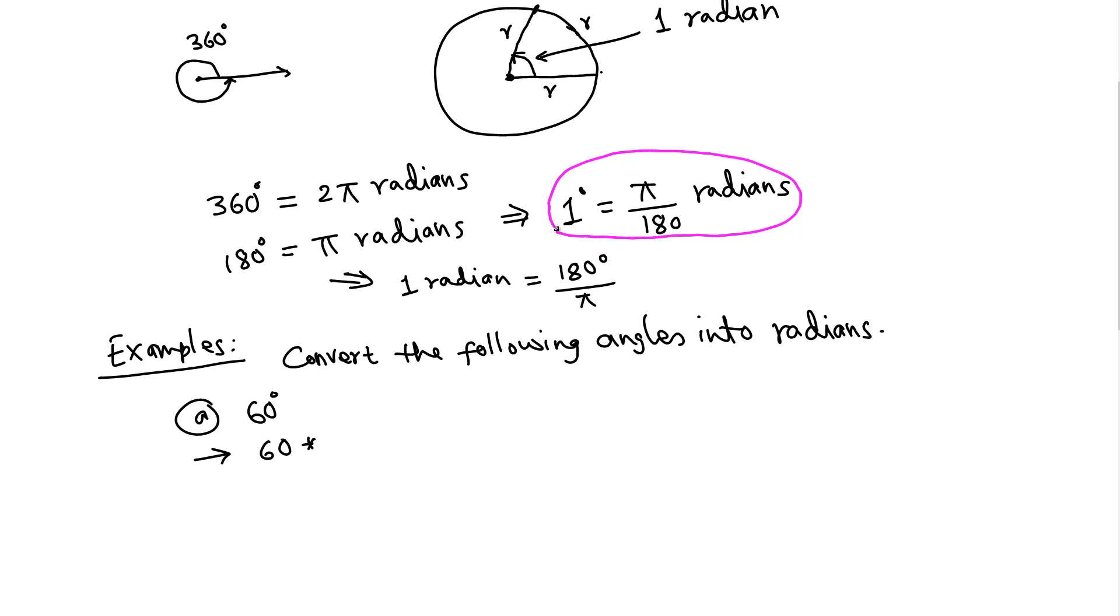So 60 degrees times π over 180 radians. Now 60 is on the top and 180 on the bottom, so we can write in lowest terms. 60 divided by 10, divided by 10, now 6 goes into 18 three times, so we get π over 3 radians.